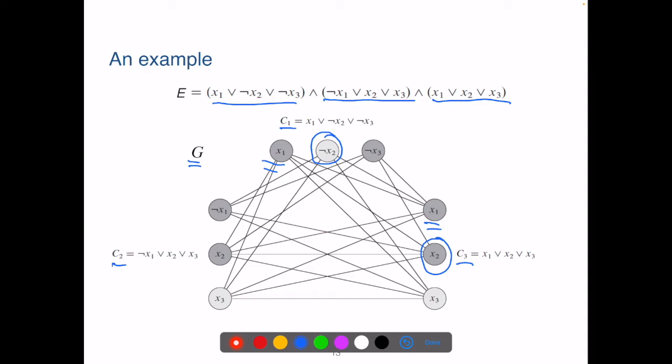First, if G does have a 3-clique, is E satisfiable? Note that vertices from the same clause group are not connected.